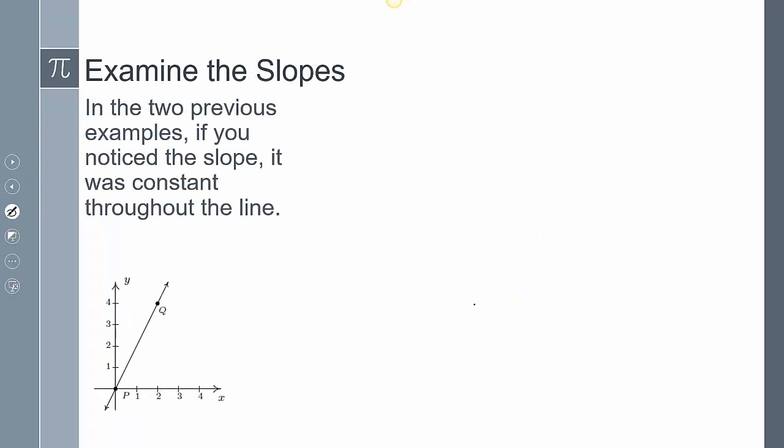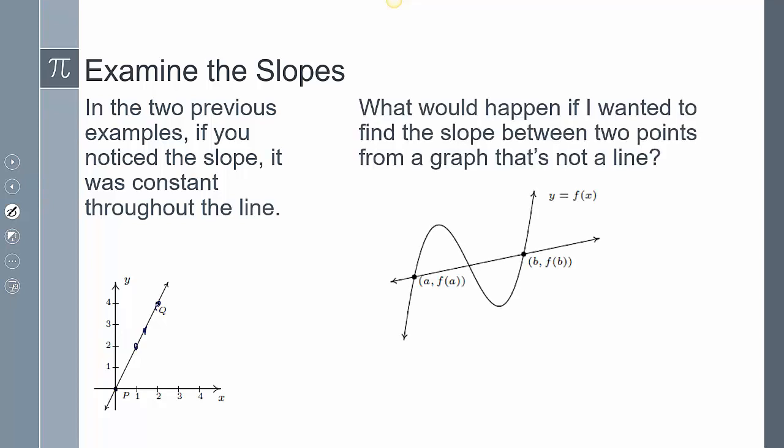One thing we saw in common with everything we've done so far, examining these lines, is the slope is constant throughout the entire line. If I pick any two points, my slope's always going to be the same. What if I wanted to find the slope between two points on a graph that's not a line? If I want to find the slope of a graph that's not a line, we call this the average rate of change.